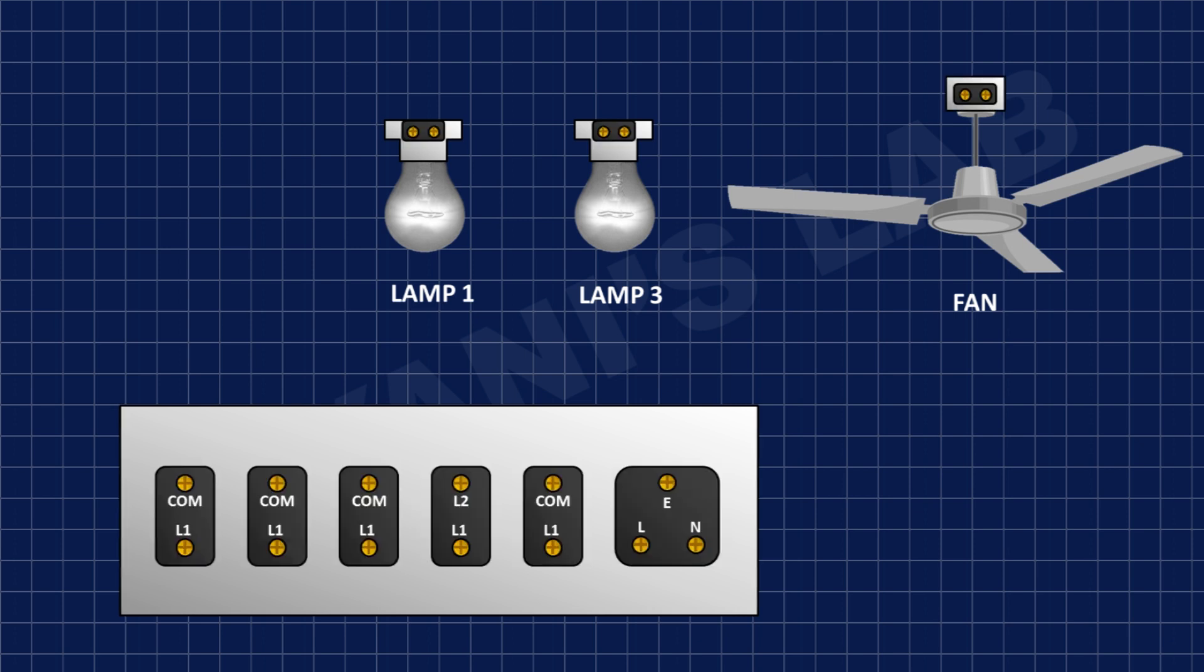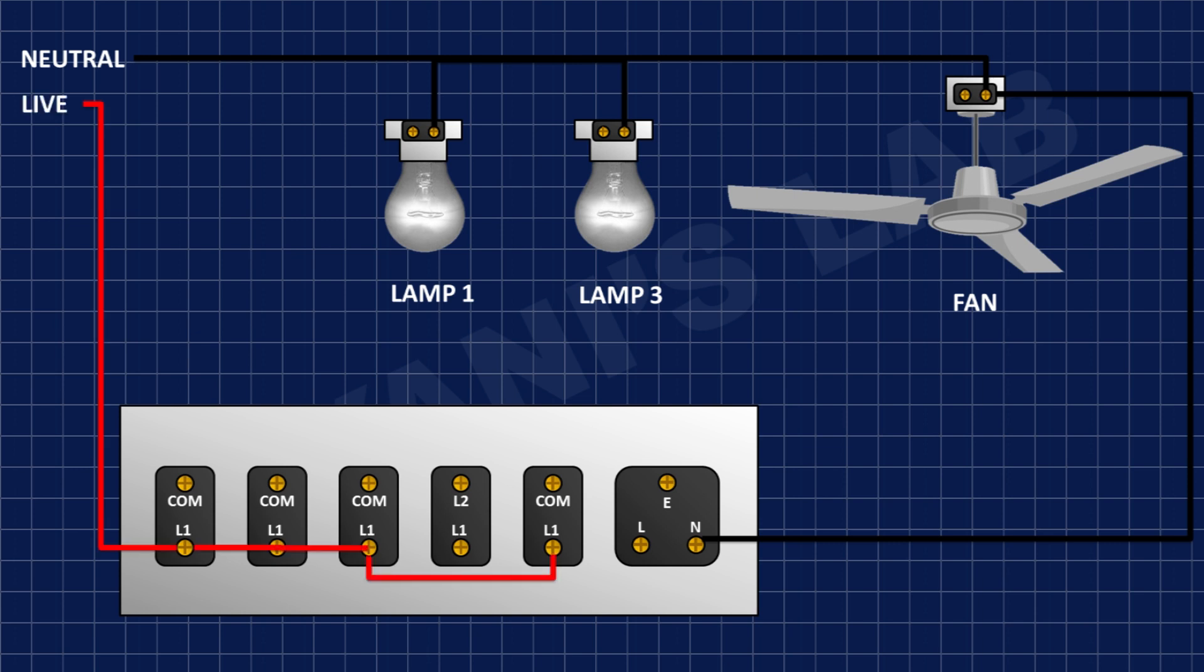First of all, I'm going to connect neutral wires to all the devices and the neutral pin of the socket. After that, I'm going to connect the live wire to the L1 pin of all the switches.